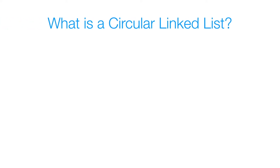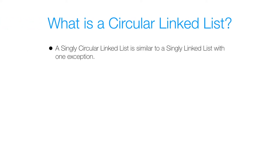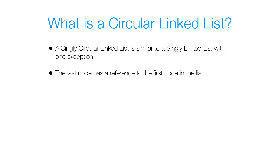So what is a circular linked list? A singly circular linked list is similar to a singly linked list with one exception: the last node has a reference to the first node in the list. Here's a visual representation of what that looks like.